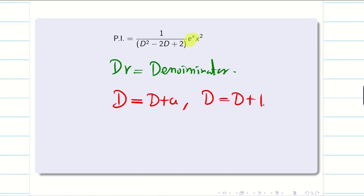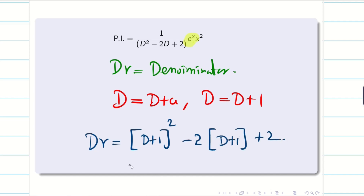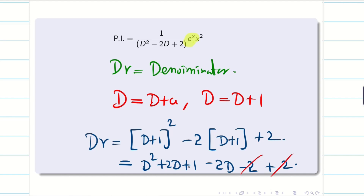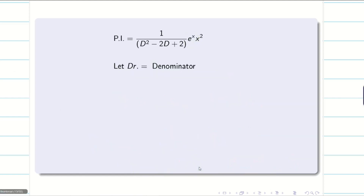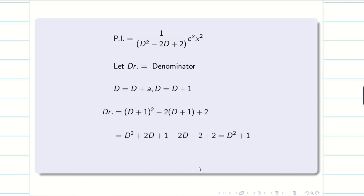Substituting d replaced by d+1, the denominator becomes (d+1)² − 2(d+1) + 2. Expanding: d² + 2d + 1 − 2d − 2 + 2. The −2 and +2 cancel, and the 2d and −2d cancel, leaving simply d² + 1. We push e^x to the left hand side, giving us 1/(d²+1) acting on x².